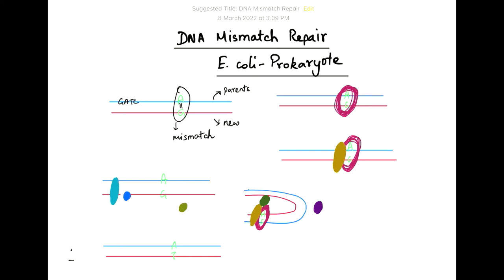In the new strand, this will be CTAG. So it is a palindrome sequence in which a protein called dam methylase will act to methylate the adenine base. And so the old strand or the parent strand alone will be methylated at the adenine by dam methylase.